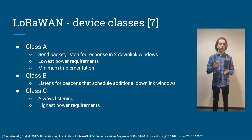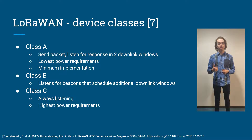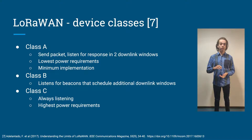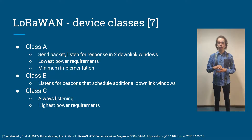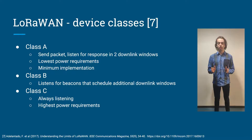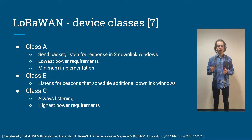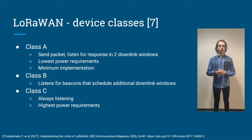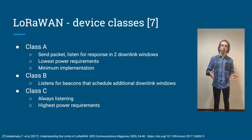There are three device classes in LoRaWAN. Class A is the simplest class. It has very low power requirements, and after sending a message, it only listens for two specific downlink windows. If it receives a message in the first downlink window, it doesn't listen for the second downlink window.